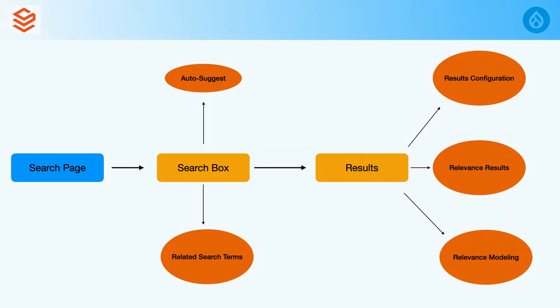The search box has two different parts and results have different categories. When we think of a search page, one major component is the search box where the user writes something to get results. The two subcomponents can be classified as the auto-suggest — what suggestions you provide the user when he starts typing characters in the search box. We have a tab in Searchstudio where you can configure the manual auto-suggest.